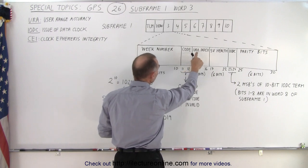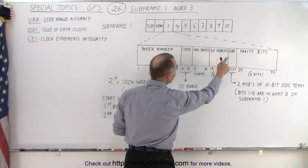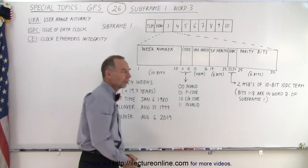a code, the URA index, the SV health, the IODC and the parity bits. So what is all that?